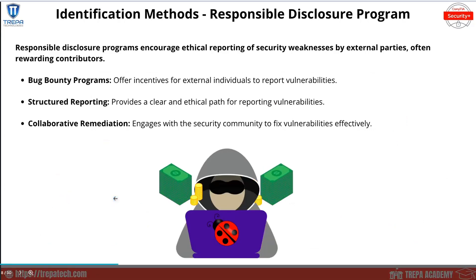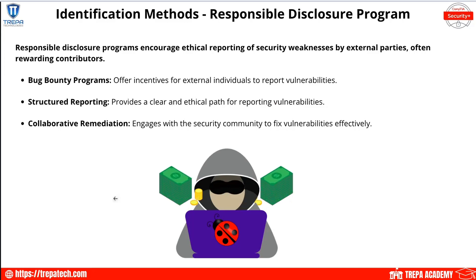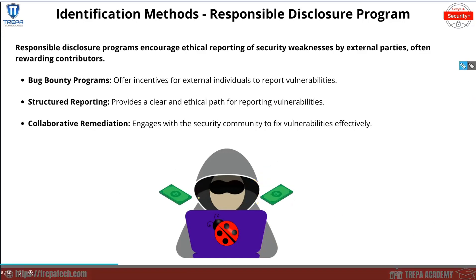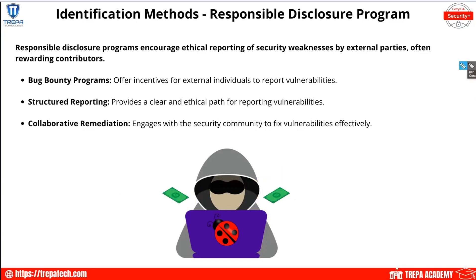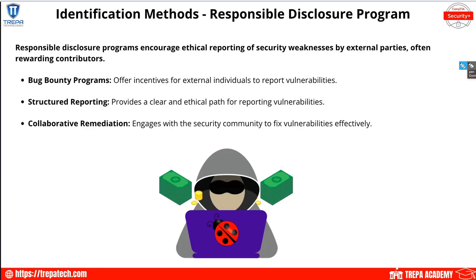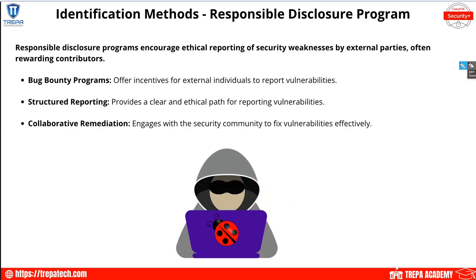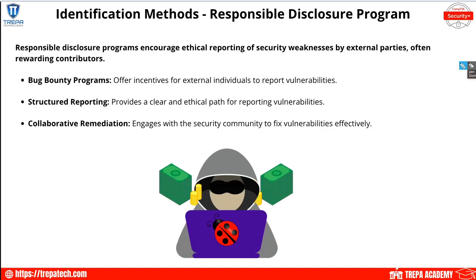Responsible disclosure programs encourage ethical reporting of security weaknesses by external parties, often by rewarding contributors. This is famously known as bug bounty programs. As a large organization — like Apple — you can offer a reward for exploiting a specific process, service, or infrastructure. Bug bounty programs provide structured reporting, giving a clear ethical path for reporting vulnerabilities. If you want to engage in red-hat activities as an enthusiast or with a dedicated team, this is a way to do ethical hacking.